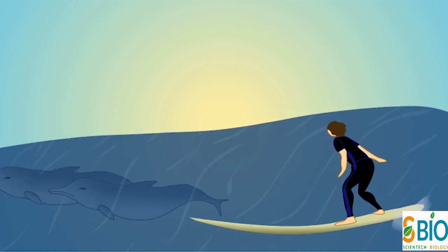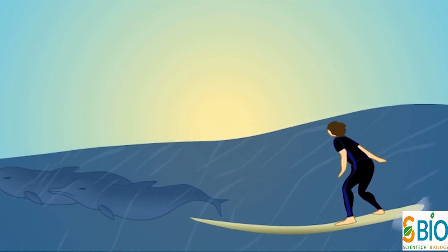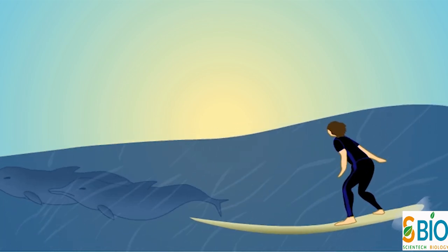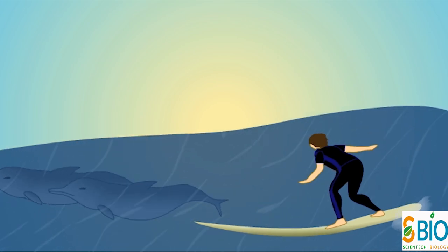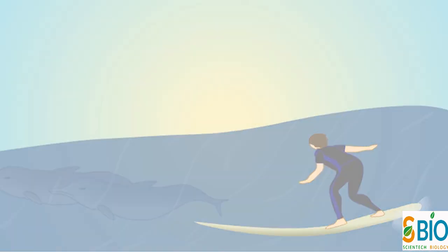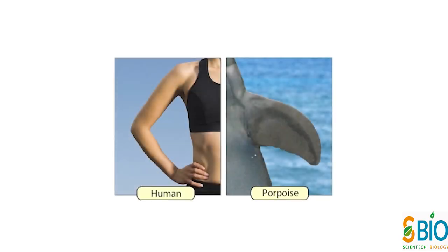Evolution का एक Mechanism जिसे Natural Selection कहते हैं, यह एक ऐसा Powerful Force है जो Populations को अपने Environment के अनुकूल बनाता है। Evolution के Evidence की बात करें तो इसमें मुख्यतः 5 Primary Lines हैं जो कि Evolution को Support करती हैं।